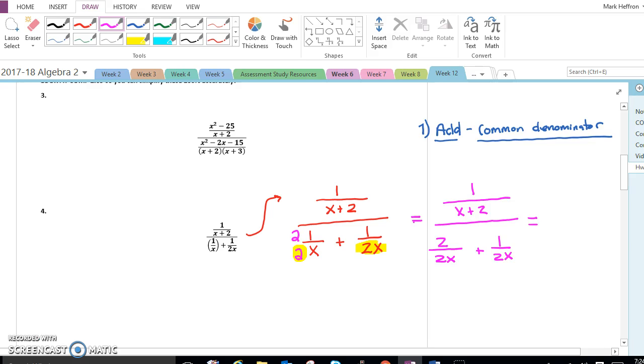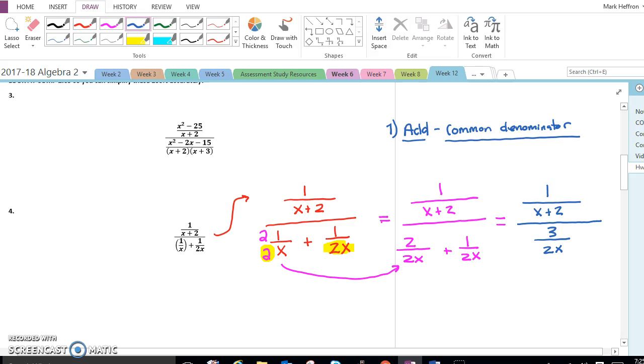Nothing changes, except I have 2 times 1 is 2, and 2 times x is 2x, and now I have a common denominator, and I'll rewrite again. You can see I combined the 2 plus 1 and got 3.